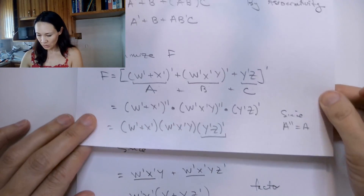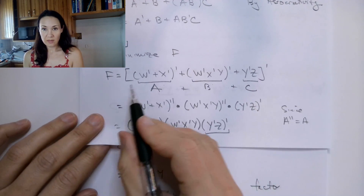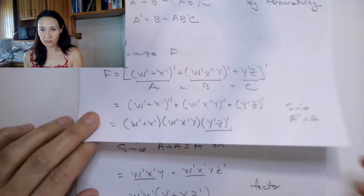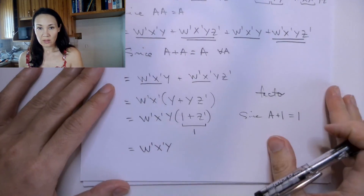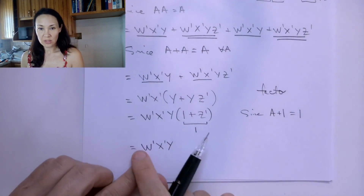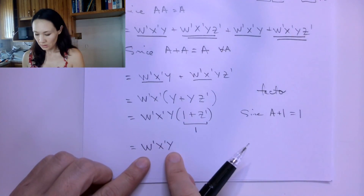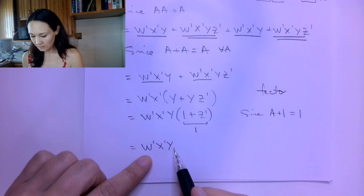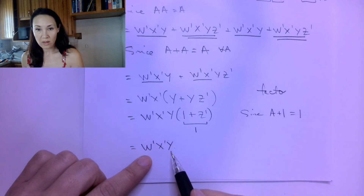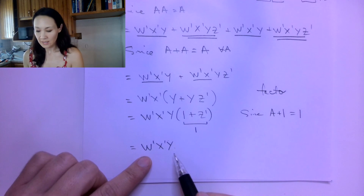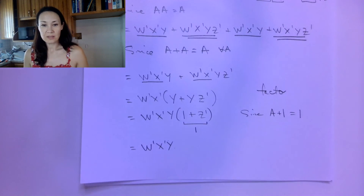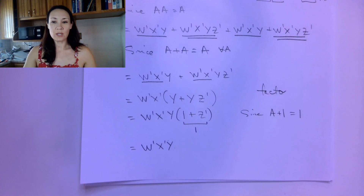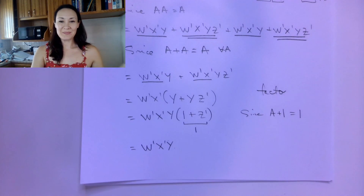So the simplification of this original function, after all those steps, breaks down to simply three inputs, two inverters, and one three-input AND gate. Let me know if you have any questions about those examples.